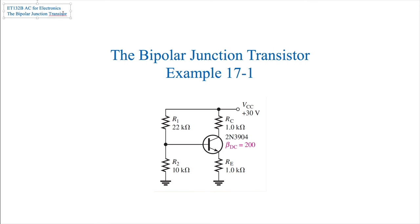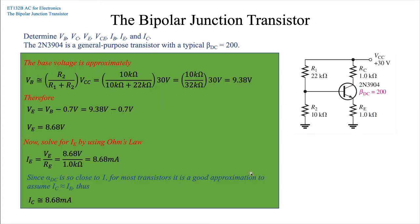Let's take a look at an example for the bipolar junction transistor. This is example 17.1 out of your text. We have a representative example here. In this example, what they want us to do is solve for all of the voltages and currents given the resistor values.